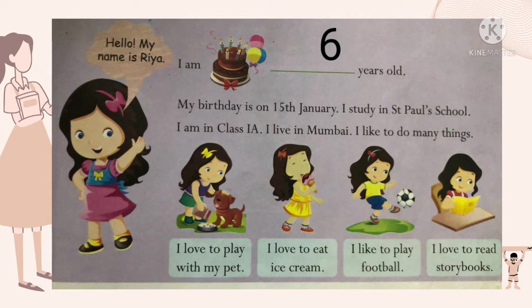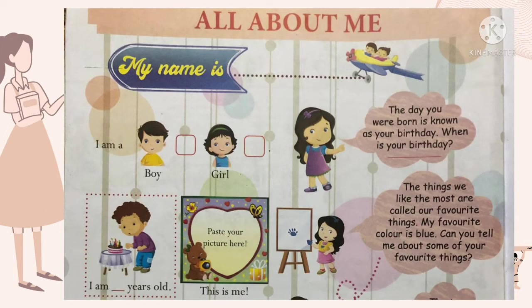So Riya ne apne introduction mein bataya: kaunsi school mein padhai karti hai, uska birthday kab hai, kaunsi class mein hai, kahaan rehti hai, aur kya kya cheezein karna pasand hai. Now come to the next page, page number 10. Page number 10 pe likha hai 'All About Me' — me ka matlab hai hum yahan pe khud ke baare mein likhenge. Take out your pencil everyone.